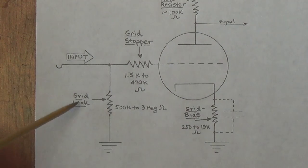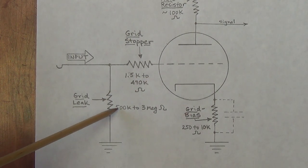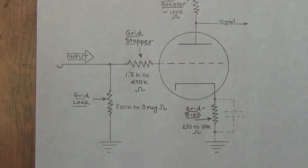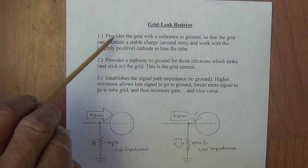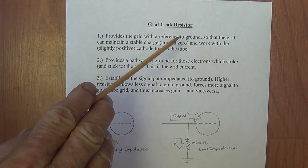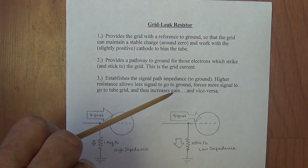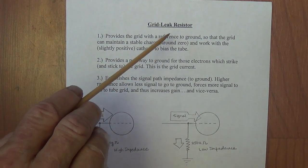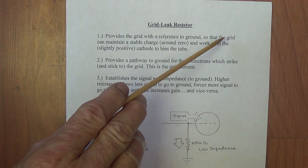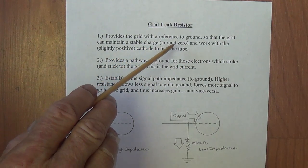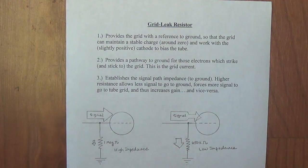Now, let's move on to the grid leak resistor, which, as we saw in the diagram, is between the grid and ground. Very high resistance. Generally, 500k to 3 million ohms. The grid leak resistor has three main purposes. Number one, provides the grid with a reference to ground. Now, this isn't going to make a lot of sense to a lot of people right now. But when we get to our discussion in the next video of the cathode bias resistor, I will hopefully make this clear. But for now, the grid leak resistor will help the grid maintain a stable charge of around zero and work with the slightly positive cathode to bias the tube.